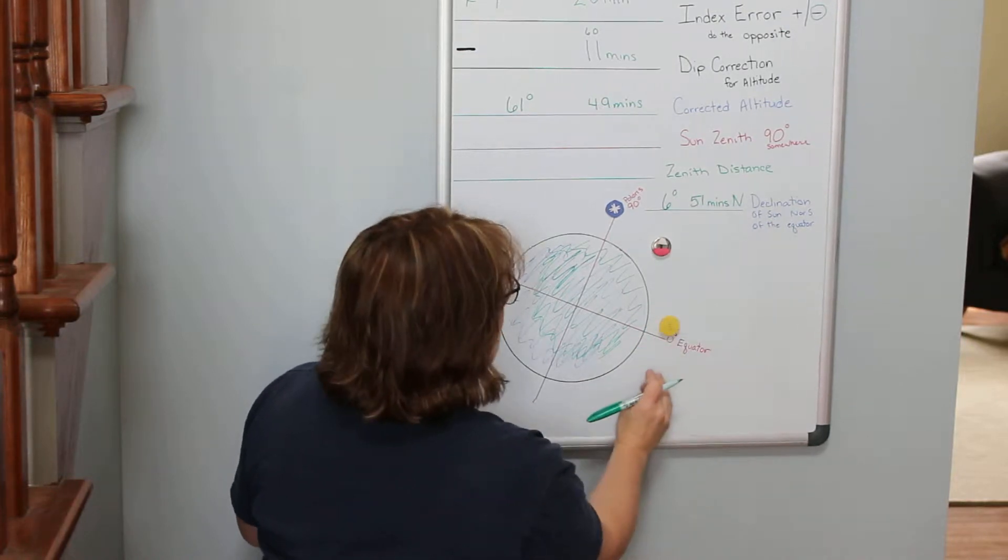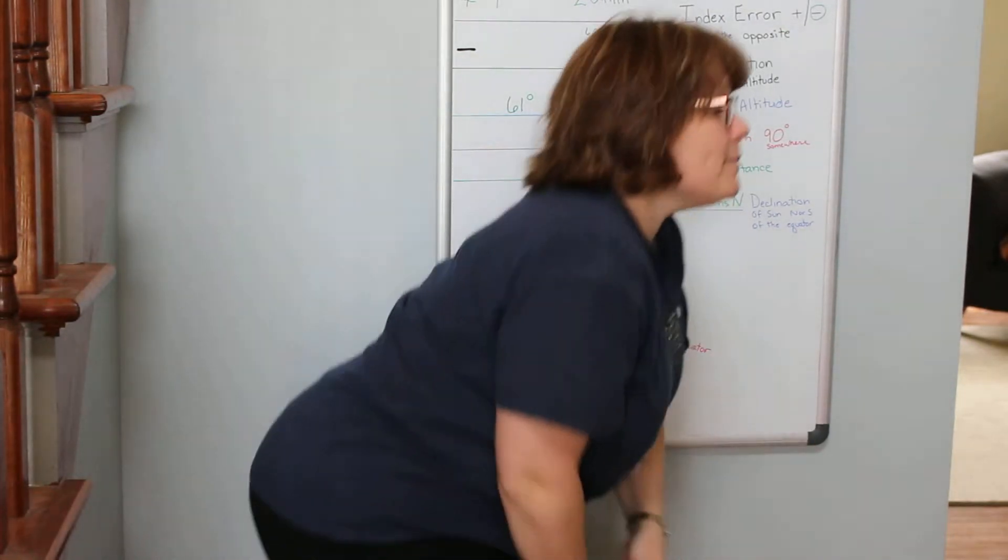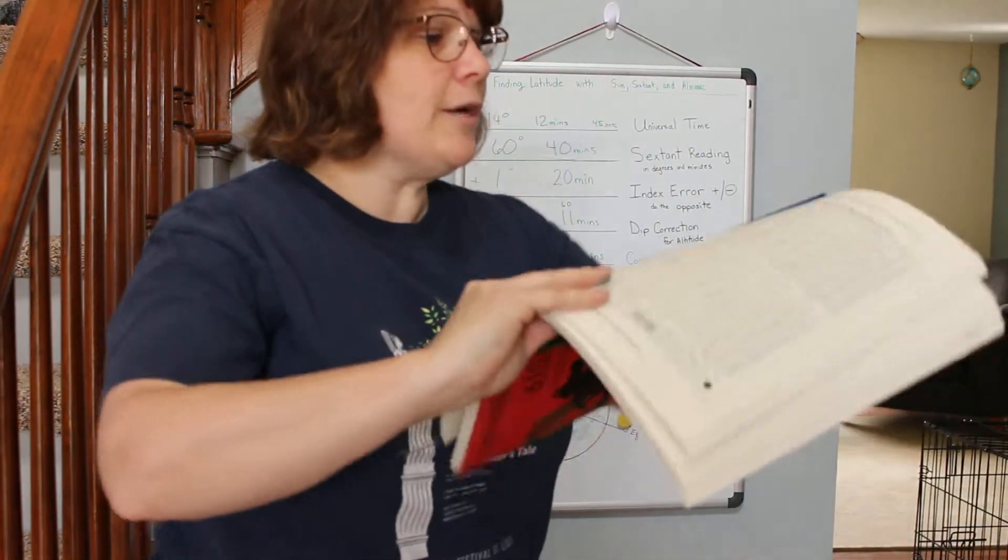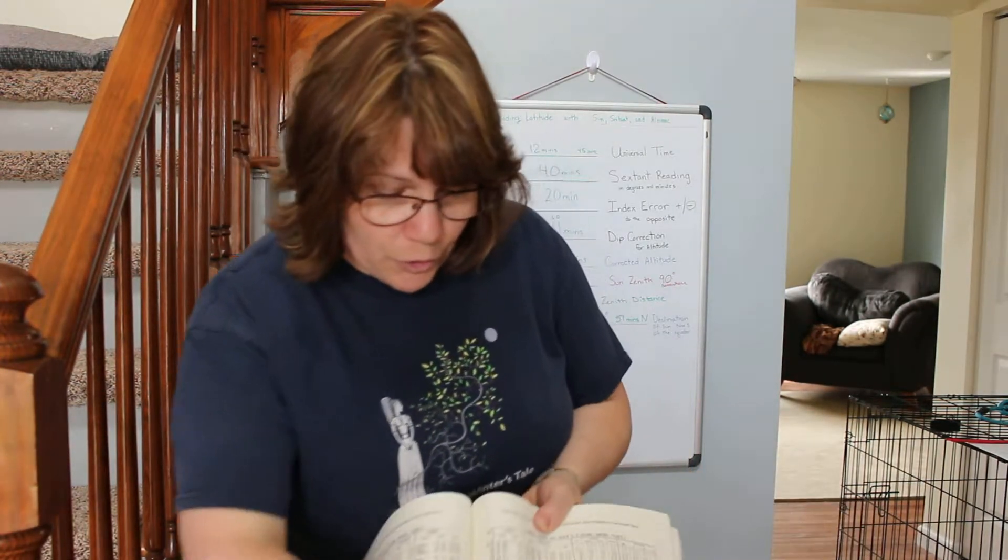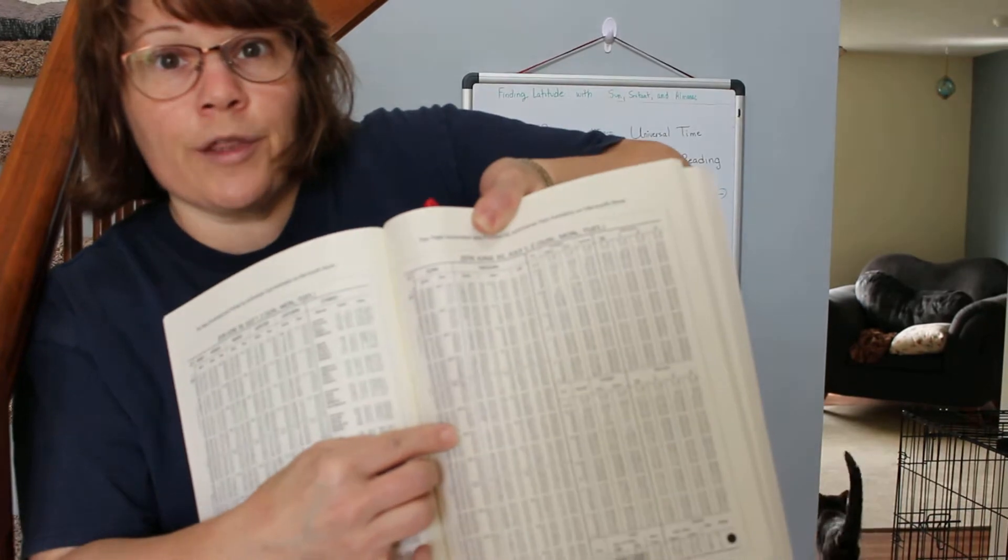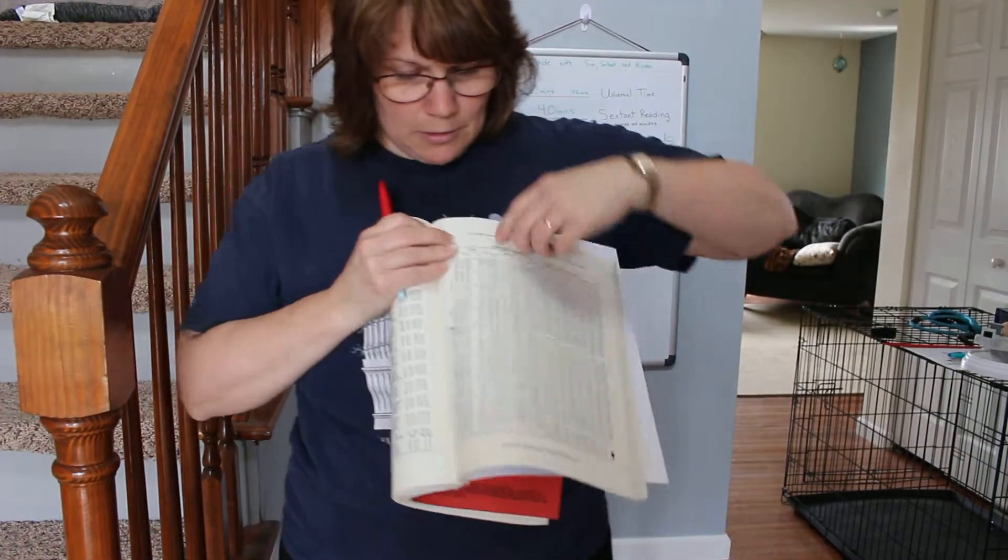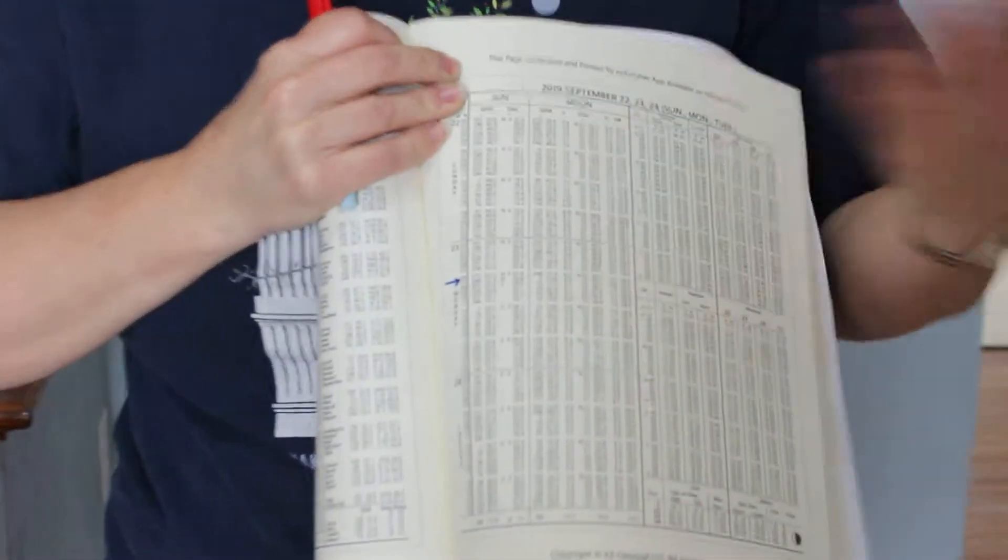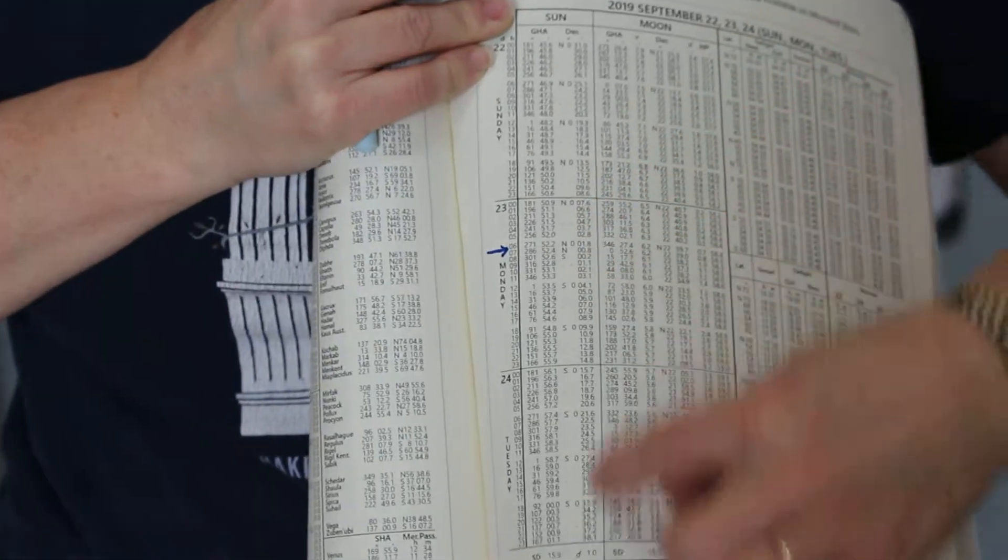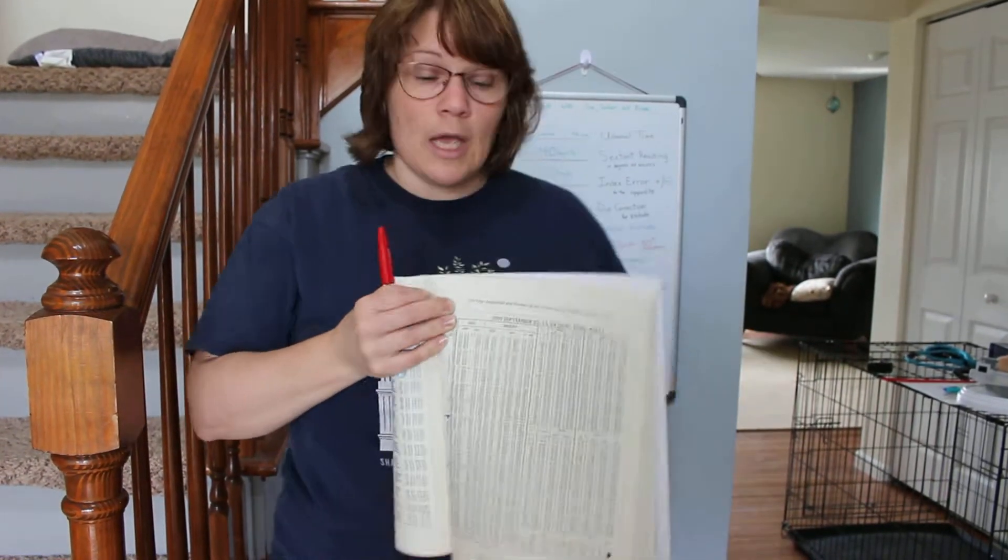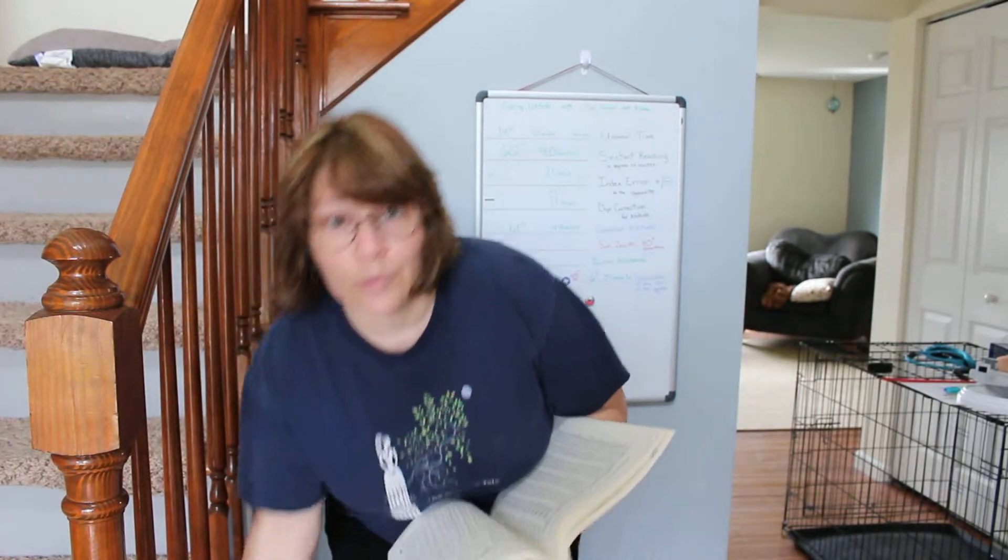The declination is only within that 23.5 degrees north or south, and let me show you that because that's really cool. There's a way to see that in the almanac. Here in the almanac, I've marked a couple pages. In June you can see that my declination is north 23 degrees. And then you can see back here that in September my declination is 0 degrees north and south. So it's only by minutes at that point.